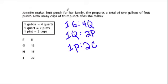So Jennifer makes fruit punch for her family. She prepares a total of two gallons of fruit punch. How many cups of fruit punch does she make? Okay, so we're going from gallons to cups. And I think what's nice about this problem is that they're saying we have two gallons.